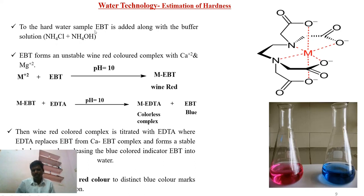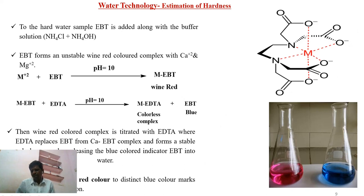The hard water forms a complex with EBT — that is, the calcium or magnesium ions present in the water form a metal-EBT complex, which is wine red in colour. After that, we titrate with EDTA. While titrating, the metal-EDTA complex is formed and the metal-EBT complex is decomposed. The EBT is released from the complex, and the metal reacts with EDTA to form a stable metal-EDTA complex. The free EBT is blue in colour, so the end point is a colour change from wine red to blue. This is the structure of the metal-EDTA complex, where oxygen and nitrogen atoms in EDTA form coordination bonds with the metals.